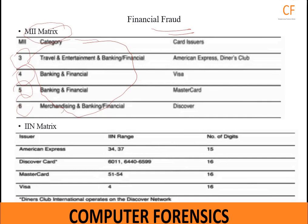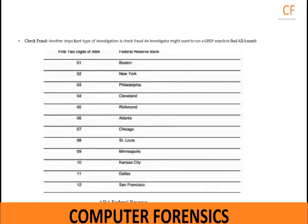Another investigation type is check fraud. An investigator might want to run a GREP search to find ABA numbers. An American Bankers Association (ABA) number is found on a check and indicates how the financial instrument is to be routed through the banking system. The first two digits of an ABA number correspond to a Federal Reserve Bank, and the table lists these banks.